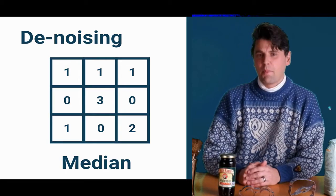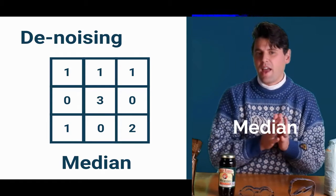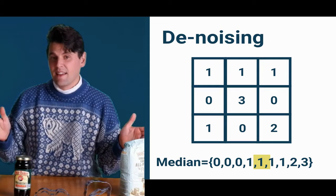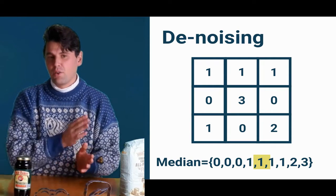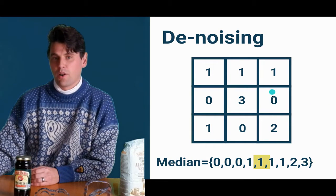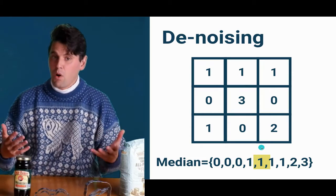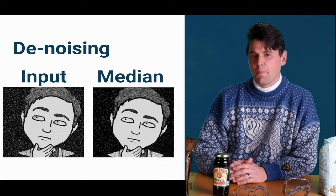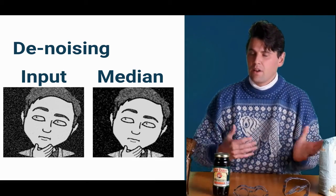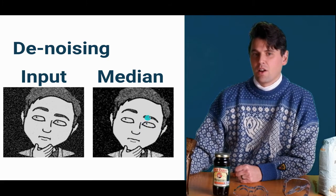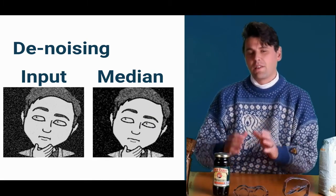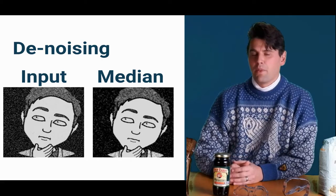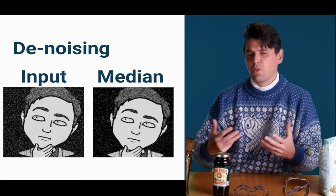The next operation, a little more sophisticated, is called the median operation. Instead of adding them all up and dividing, we put them in order from lowest to highest and then take the one in the very middle - the median. If we do that here, we take these nine values, put them in order from lowest to highest, and the one in the middle is actually one. In this case the median and the mean are the same. The median is a little bit better at preserving edges, but it's still not perfect - you can see in the eyes near the pupils we've lost a little bit of contrast. So while it's a step up from the mean operation, it's still not the operation we're going to want to use within iterative reconstruction.